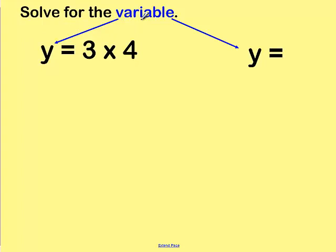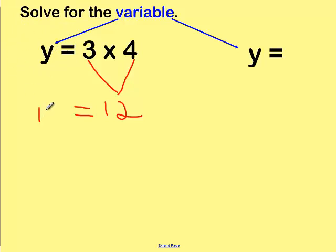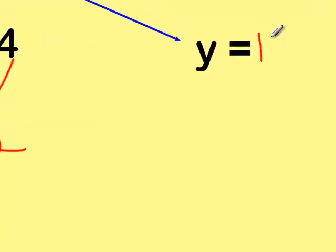Here's a new one. Solve for the variable. Remember, the variable is the letter — the unknown number. Pause the video, work the problem, and push play when you're ready. The left side is missing. The right side doesn't have any missing parts, but it's not just one single number. 3 times 4 is 12. The missing number is on the left, so it's a little backwards — we work from right to left. Y has to be 12, since there's nothing else on that side. Our equation has to be equal, so Y in this case has to be 12. We can check it: 3 times 4 is 12 — correct. So Y is the same as 12.